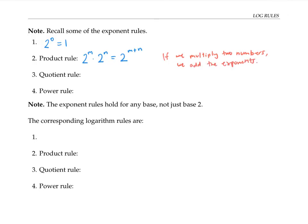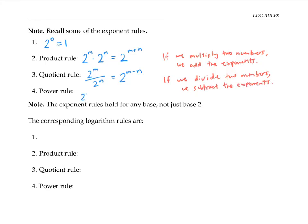We also have a quotient rule that says that two to the m divided by two to the n is equal to two to the m minus n. In words, this says that if we divide two numbers, then we subtract the exponents. Finally, we have a power rule that says if we take a power to a power, then we multiply the exponents.